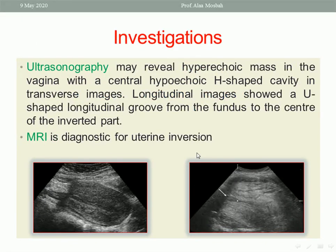Investigations include ultrasonography, which is cheap and available everywhere. In this picture, an incomplete inversion type and a complete inversion type are shown — notice the endometrium outlining the outer surface because the uterus is turned inside out. MRI is also diagnostic and can be used in doubtful cases. However, this condition is diagnosed mainly by clinical examination, and sometimes ultrasound may be needed.